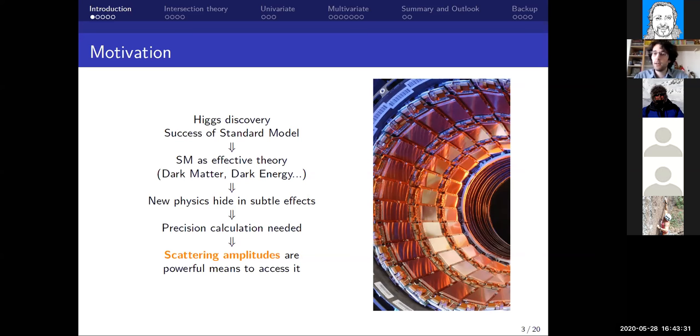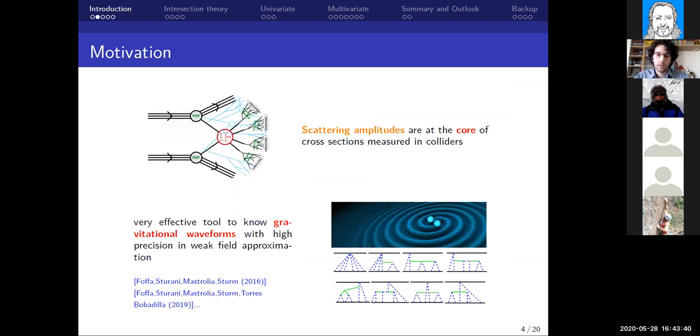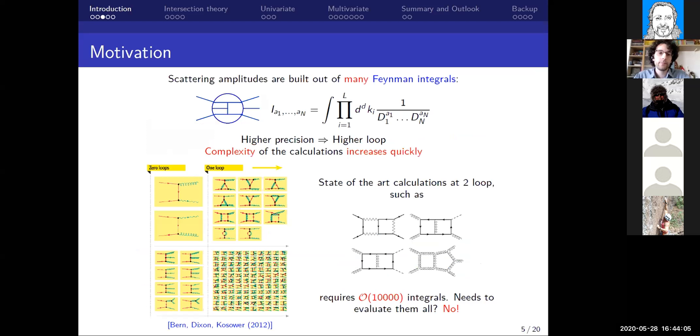A way to get a more precise result is to use scattering amplitudes, which are powerful tools. They are at the core of the cross sections that we are measuring in modern colliders. If we want to look in a different way to find new physics, we can look for gravitational wave physics, in which again scattering amplitudes through a diagrammatical procedure allow us to get powerful and useful information.